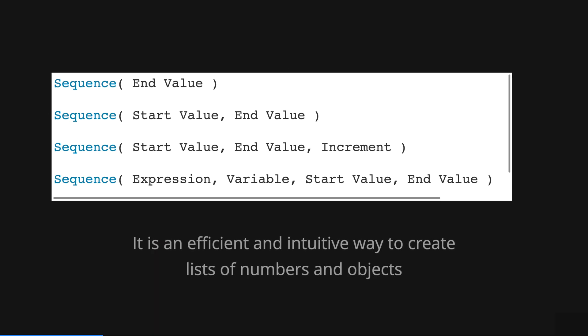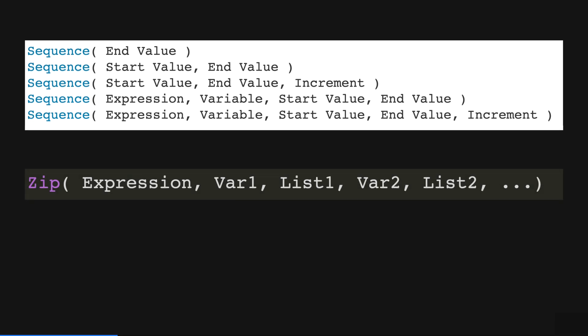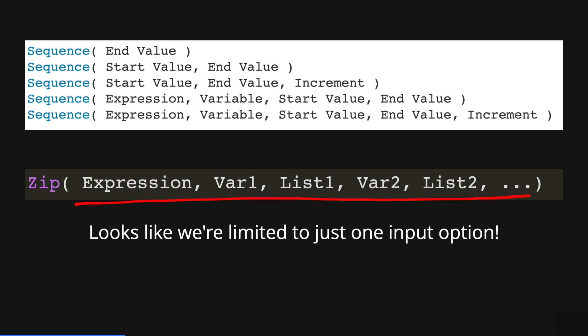In fact using the sequence command is already an efficient and intuitive way to create lists of numbers and objects. In addition we can use it with different input options. If we compare with the zip command it seems that we are limited to only one input option. So what exactly does the zip command do?